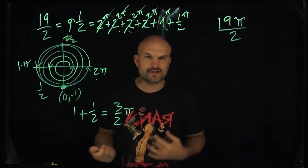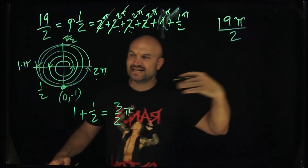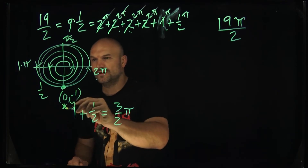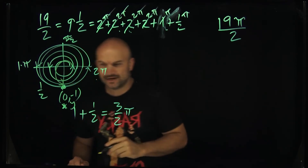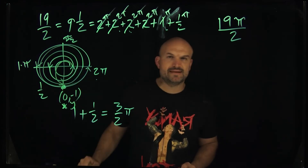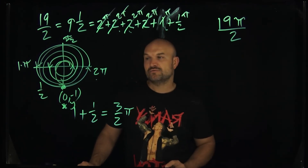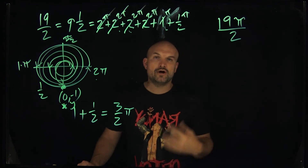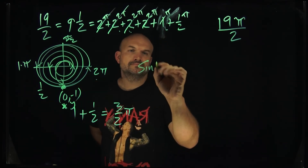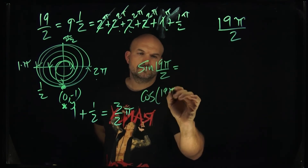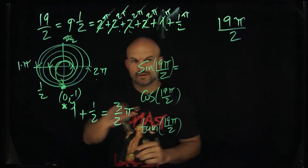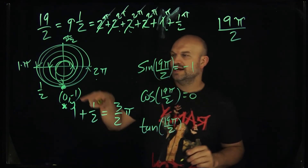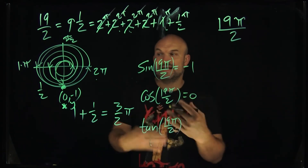Now we just need to evaluate the six trig functions at that point. On the unit circle, sine represents the y-coordinate, cosine represents the x-coordinate, and tangent is y over x. So the sine of 19π/2 is −1, the cosine of 19π/2 is 0, and the tangent is −1 over 0, which is undefined.